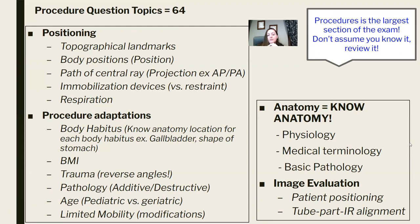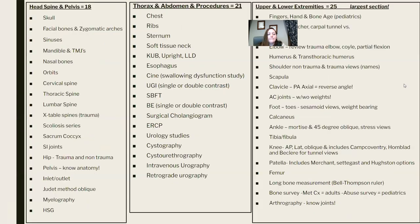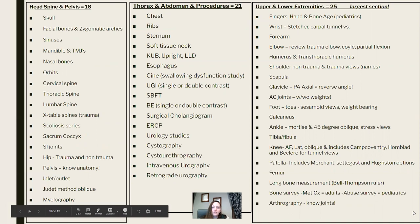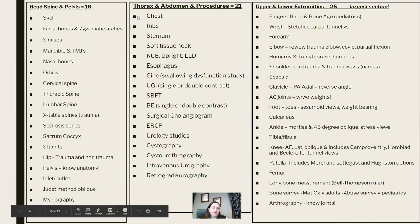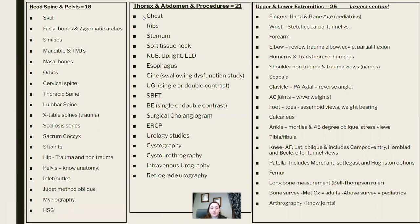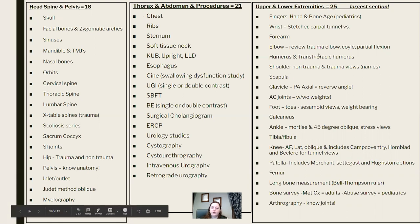Image evaluation — can you look at an image and evaluate it? Is there proper patient positioning? Is there an error in alignment? Procedures is the largest section — 64 out of 200 scored questions. Don't assume you know it. Go back and review. Attachment A on the content specs breaks down the possible exams or views under each section. Head, spine, and pelvis: 18 questions. Thorax and abdomen: 21 questions. Upper and lower extremities: 25 questions — your largest procedures subsection. Go through all of those.